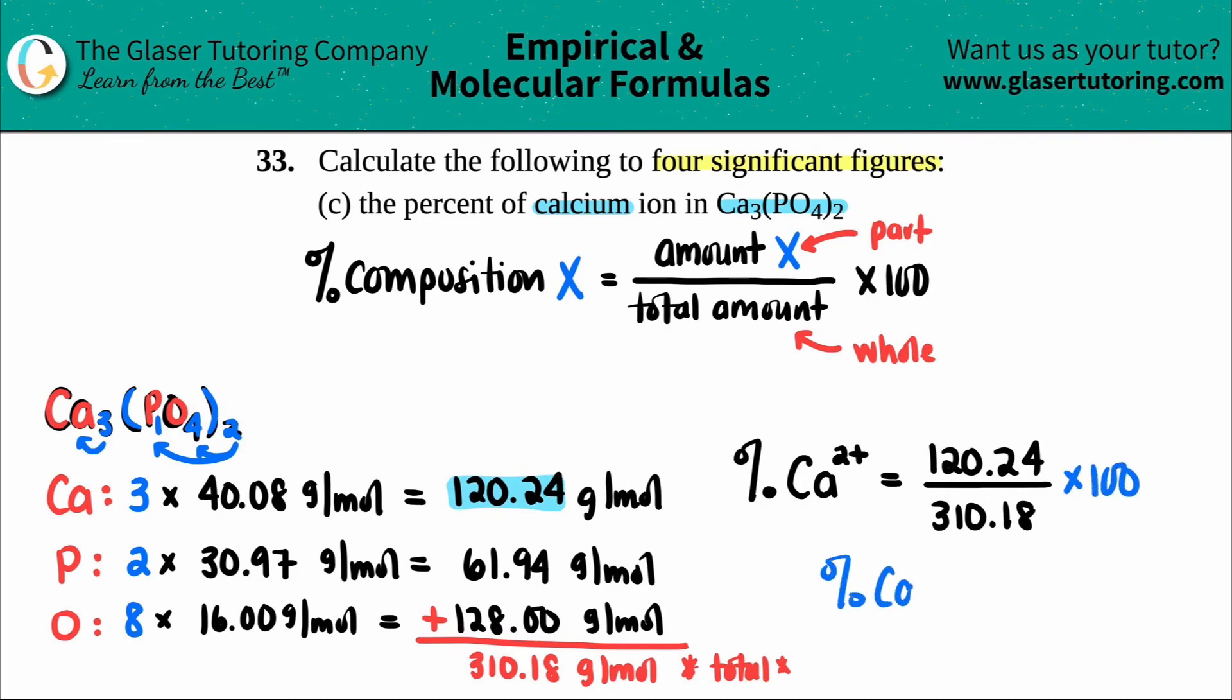And now all we have to do is just take that and times it by 100. So the percent calcium would be, drum roll please, 120.24 divided by 310.18 times 100, 4 sig figs because that's what they want, 38.76%. And that's the total amount of calcium ion in this compound. So out of the whole compound, calcium phosphate, Ca3(PO4)2, calcium takes up about 38% or 39 if we're rounding, 38.76. And that's it.